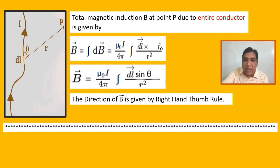The direction of B is given by the right-hand thumb rule. This is about the Biot-Savart law.